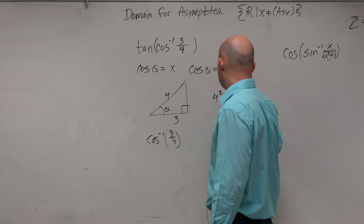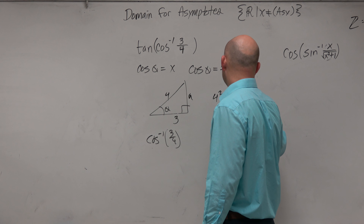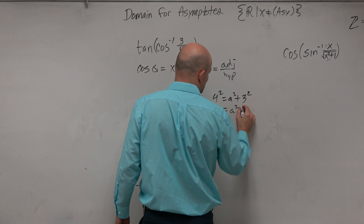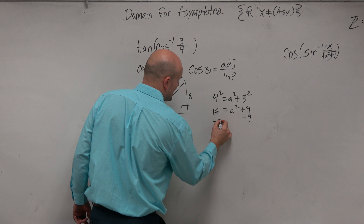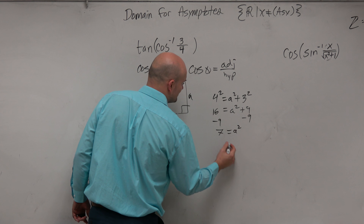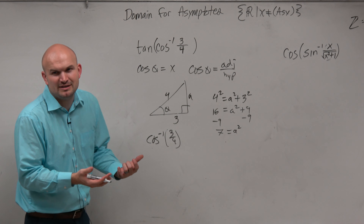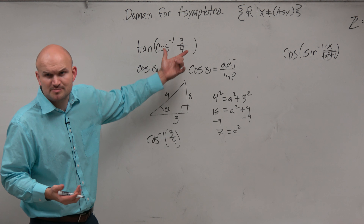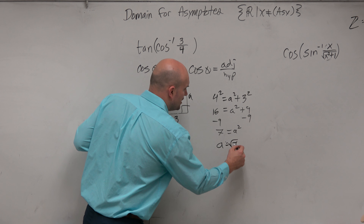So what we need to do is understand cosine differently. Don't we understand cosine also as adjacent over hypotenuse? So couldn't we also say that cosine inverse of 3/4 is the same thing as cosine of what angle equals 3 over 4? Sure. So let's represent that and get away from the unit circle for a second.